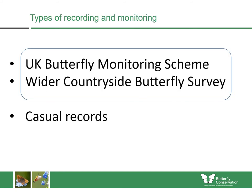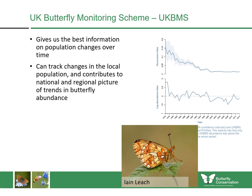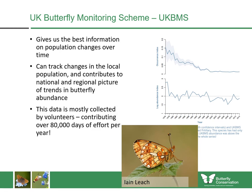Now moving on to our two main schemes for monitoring butterflies — starting with the UK Butterfly Monitoring Scheme, or UKBMS. This gives us the best information on butterfly population changes over time. Using it, we can track changes in local populations, contributing to the national and regional picture of trends in butterfly abundance. This data is almost entirely collected by volunteers contributing 80,000 days of effort per year, and we'd love more people to get involved.